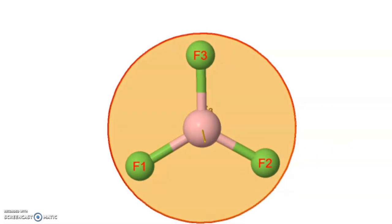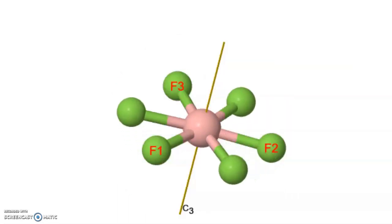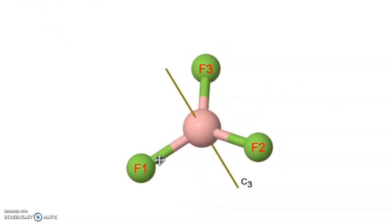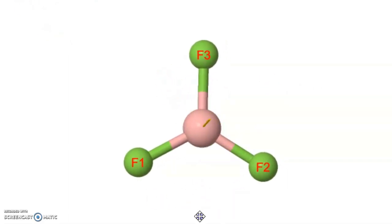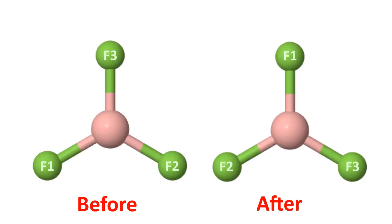then you can see that the first fluorine atom goes to the position of the third fluorine atom and third one goes to the position of second and second goes to the position of the first fluorine atom. And since the axis is passing through the center of boron atom, boron atom doesn't move at all.